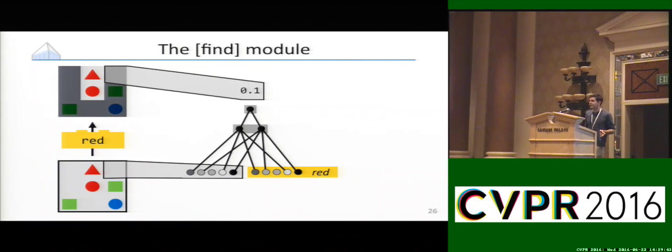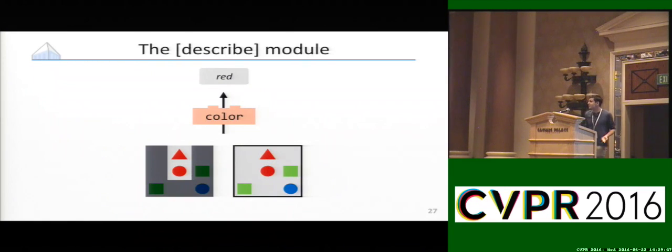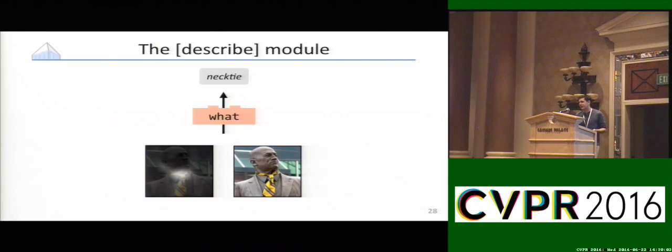That's what we might call the find module, and that's going to produce attentions at the leaves of the tree. One other kind of thing that we need to be able to do eventually is to get from the space of attentions back into the space of labels, and this is something that we call a describe module. When we're looking at a bunch of shapes and we ask what color they are, that's going to be able to say they're red. Once again, this is going to have to work in images as well and produce rich descriptions of things that appear in the image.